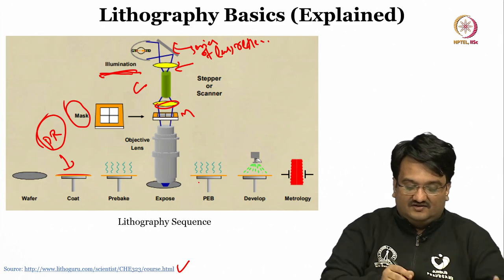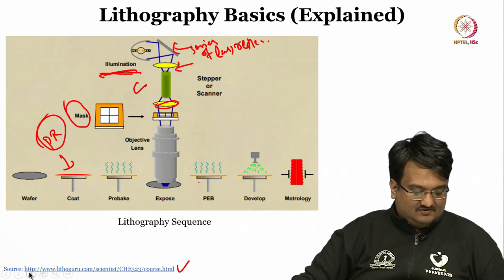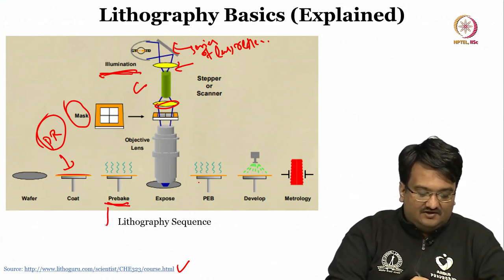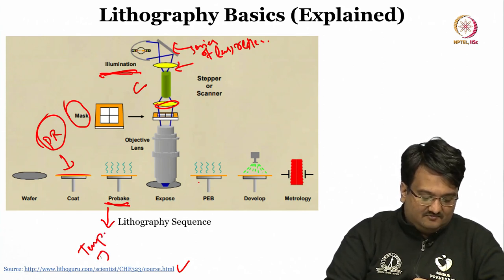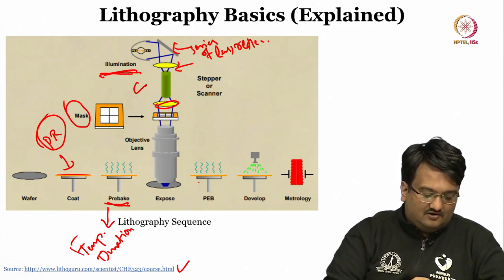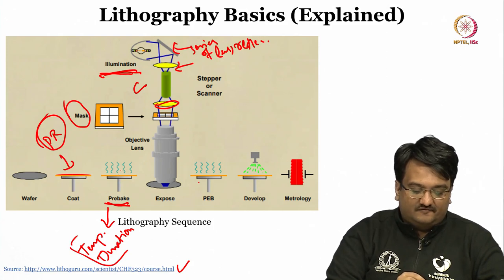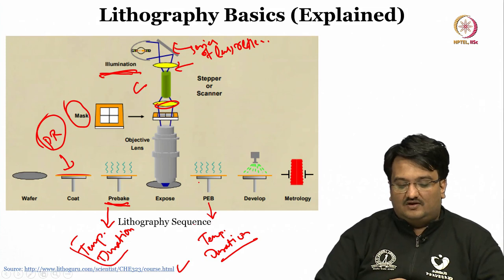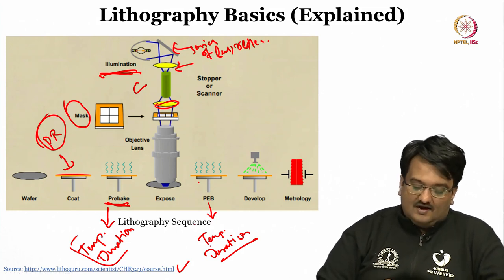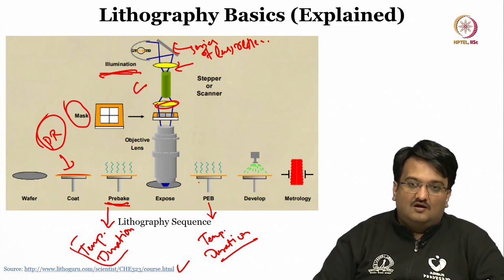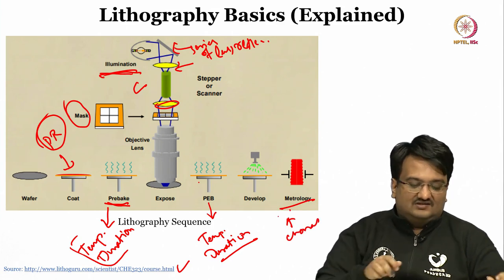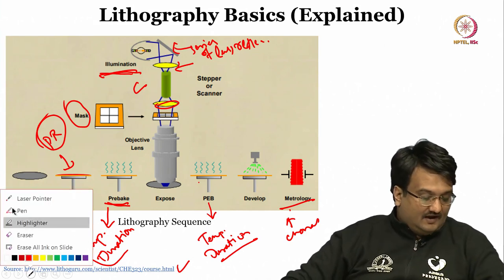After exposure through the mask and objective lens, there is pre-bake, characterized by two things: temperature and duration — at what temperature and for how long the photo resist should be baked. The same applies for post-bake. This temperature and duration is a function of your PR; you can go through the data sheets of the PR to identify the required pre-bake or post-bake parameters and how the width will be affected. Further, you can develop it, and then metrology, which is nothing but characterization. This is the overall idea of how photo lithography works.